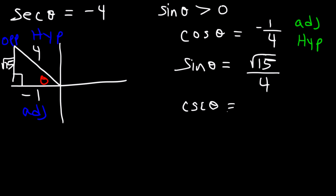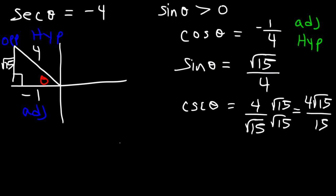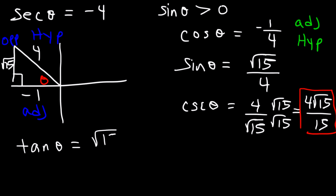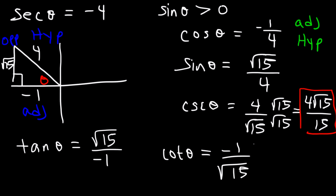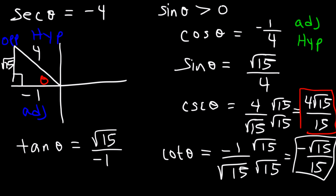Cosecant is the reciprocal of sine, so it's 4 over square root 15. And if we rationalize it, this becomes 4 square root 15 divided by 15 — so that's the value of cosecant. Next, we have tangent theta, and that's equal to the opposite side, which is square root 15, divided by the adjacent side, which is negative 1. Cotangent theta is going to be the reciprocal of that. But we're going to have to rationalize this value, so cotangent theta is going to be negative square root 15 divided by 15. And so that's it for this problem.